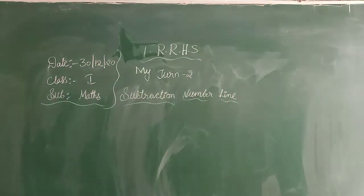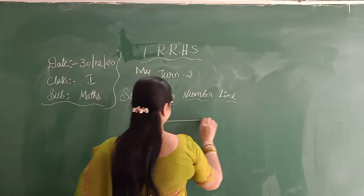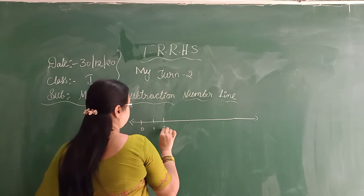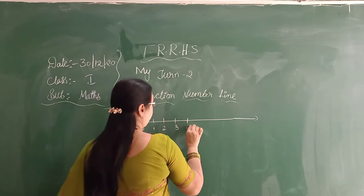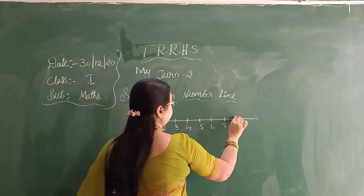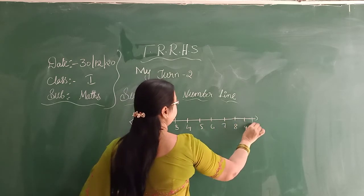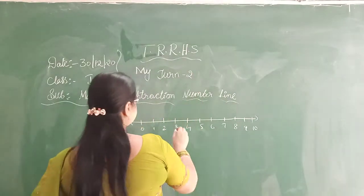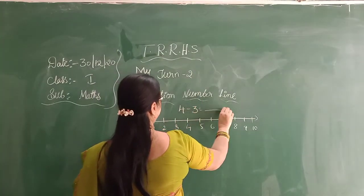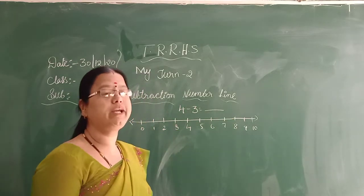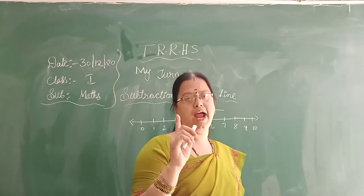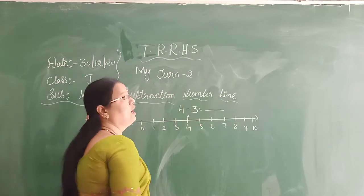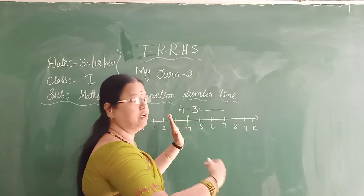I shall show you. See — 0, 1, 2, 3, 4, 5, 6, 7, 8, 9, 10. Okay. So 4 minus 3. The number is 4 minus 3 equals dash. So what you have to do — you have to stand on 4. Okay, you have to stand on 4.